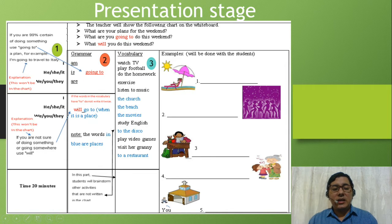I'll tell them a hypothetical example. If you are 90% sure of doing something, use going to. A plan, for example: I'm going to travel to Italy. Someone who says this has already bought the ticket for traveling to Italy. That is something that is going to happen; it's 90% sure. On the other hand, you use will when you are not sure of doing something or going somewhere. Example: We will win the championship. In this hypothetical situation, there is 50-50% certainty. They might win the championship or they might not. They are not sure about winning, but they'll make the effort.